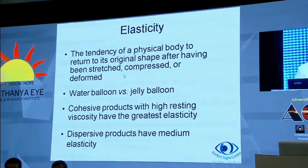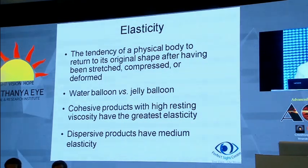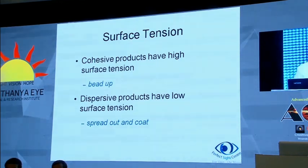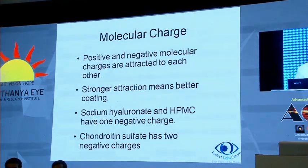Elasticity is the tendency of a physical body to return to its original shape after being stretched, compressed, or deformed. Cohesive products with high resting viscosity have greater elasticity, while dispersive products have medium elasticity. Surface tension is another important physical property: cohesive products have high surface tension and tend to bead up, while dispersive products have low surface tension and tend to spread and coat — which is why we use dispersives to coat the endothelium. The more negative charges a molecule has, the greater the attraction to surfaces.